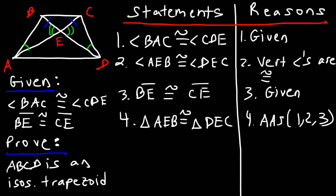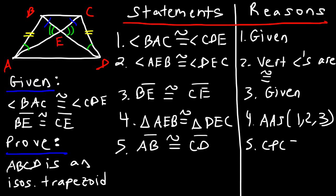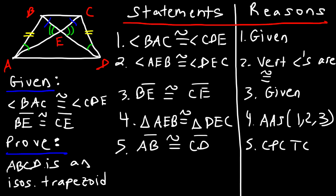Statement 5 — AB is congruent to CD. This is based on CPCTC: corresponding parts of congruent triangles are congruent. Now that we've shown that the legs of the trapezoid are congruent, we know it's an isosceles trapezoid. So the final statement is that ABCD is in fact an isosceles trapezoid.